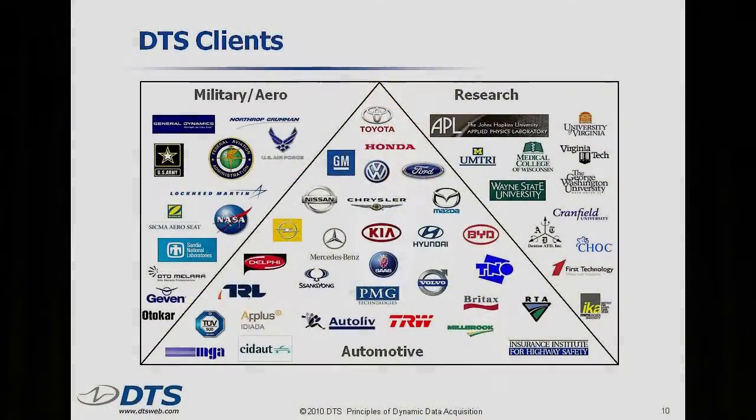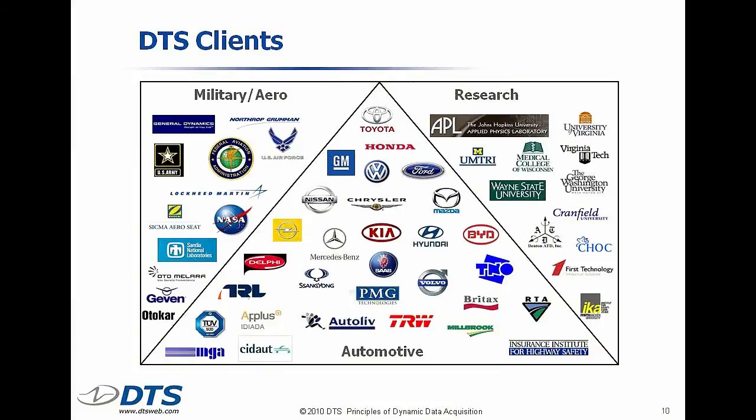Our client list: the biggest part is the automotive group — you can see all the car companies and suppliers to car companies, including the companies who make airbags, seat belts, supplemental restraint systems, and seat belt pretensioners. On the research side, these are universities that are on the cutting edge of understanding human tolerance to impact. And on the left we have organizations like NASA and the Army, Navy, Air Force, and other military organizations.